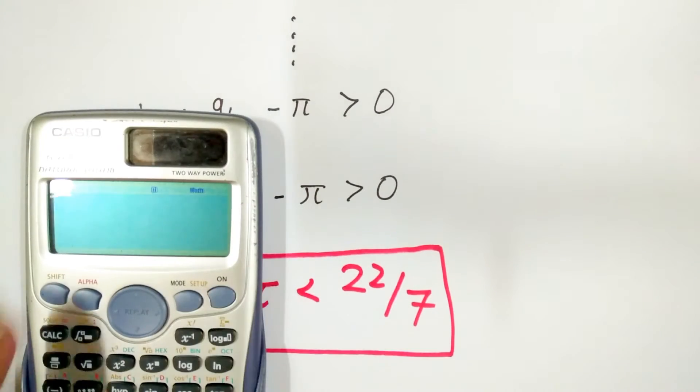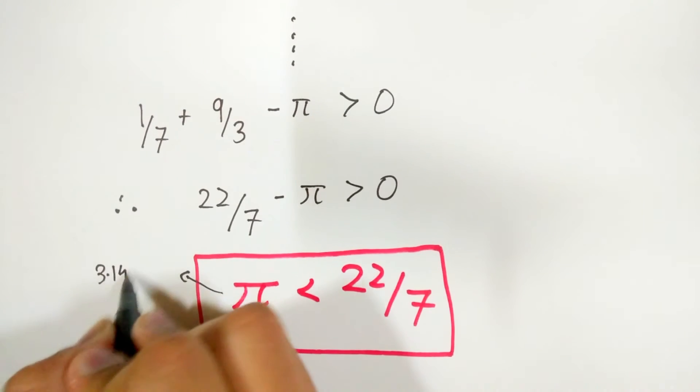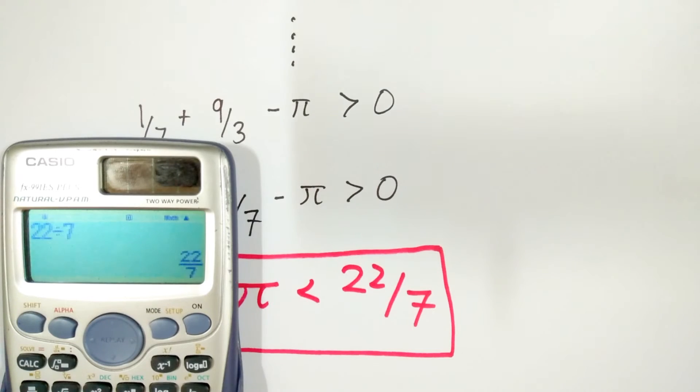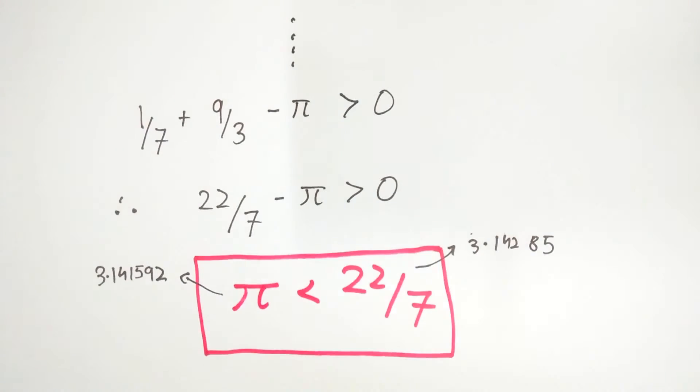This can also be verified on a calculator. While the value of the real pi comes out to be 3.141592, the value of 22 upon 7 is 3.142857.